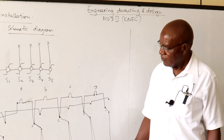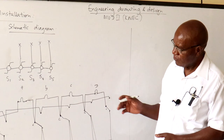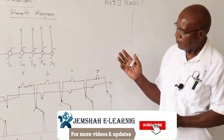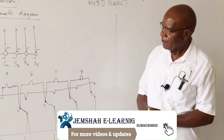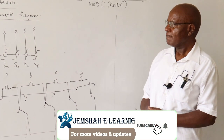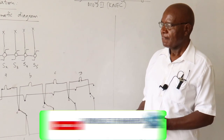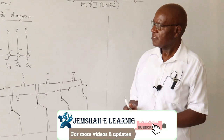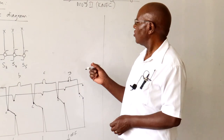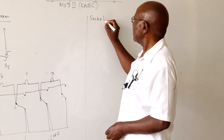I think with that we have finished the lighting sub-circuits and the areas I wanted to touch on. I've used the single pole two-way. In our practicals, I'll introduce a circuit whereby we shall use the intermediate switch. Now I can show you some of these accessories before we move on to the next stage of socket outlets.